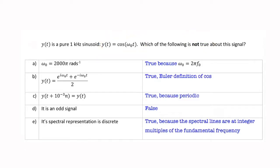Y of t equals cosine omega naught t. We're told that it's a 1 kilohertz sine wave, so we know that f naught is 1 kilohertz.